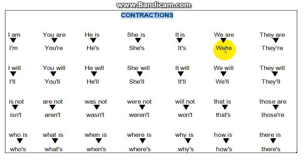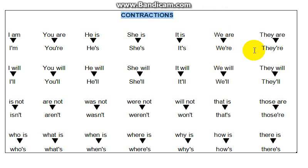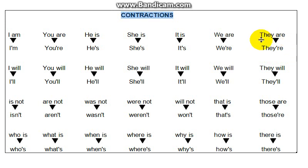'We are' becomes 'we're,' as in 'we're all here.' 'They are' becomes 'they're,' as in 'they're all here' — the 'a' is gone and the apostrophe is put in its place.